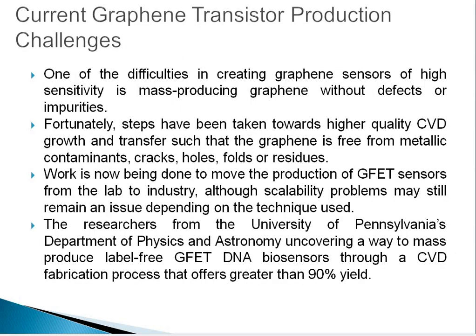Current graphene transistor production challenges: one of the difficulties in creating high-sensitivity graphene sensors is that mass-producing graphene without defects or impurities is not yet possible. Steps have been taken toward high-quality CVD growth and transfer such that the graphene is free from metallic contaminants, cracks, holes, folds, or residues. Work is now being done to move the production of graphene FET sensors from the lab to industry, although scalability problems may still remain an issue. Researchers from the University of Pennsylvania Department of Physics and Astronomy uncovered a way to mass-produce defect-free graphene FET DNA biosensors through a CVD fabrication process that offers greater than 96% yield.